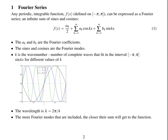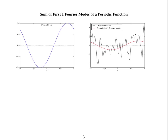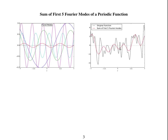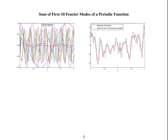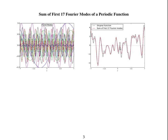The more Fourier modes that are included in the sum, the closer the sum should get to the original function. Here's an example: the black line shows the original function. Adding Fourier modes one at a time — each with a higher wave number and different amplitude — the approximation gets closer and closer, and by 20 modes it's very close, but not quite there.